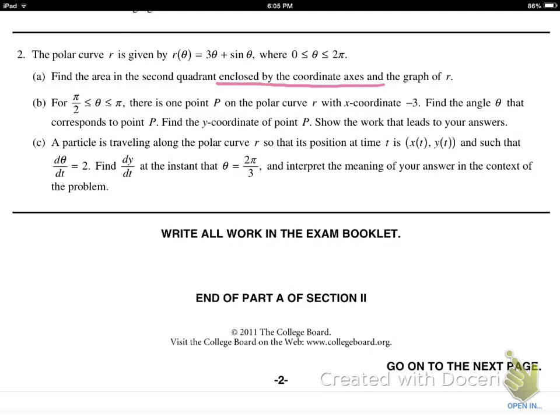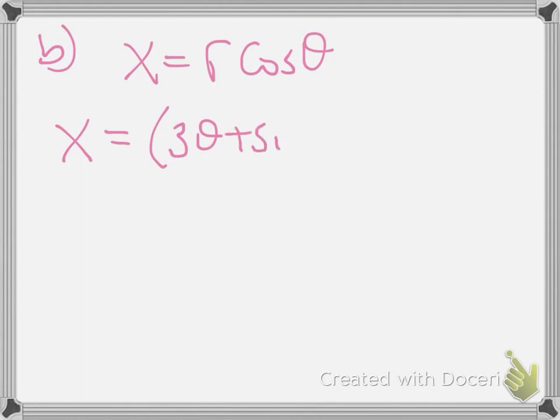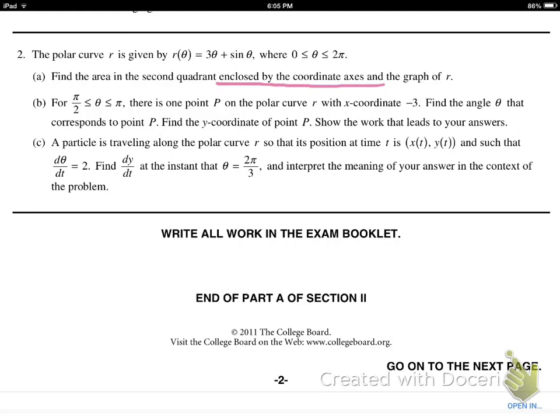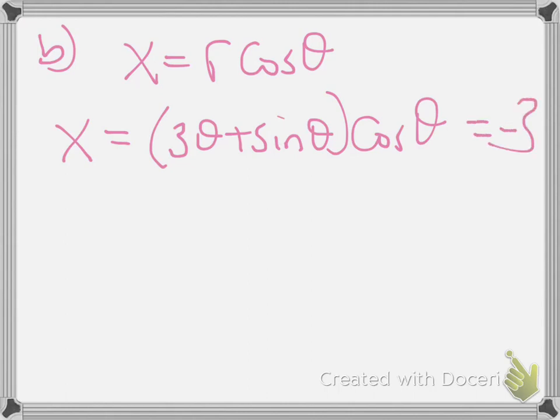The way we do that is through parametric equations. We know how to rewrite x and y from polar back to its parametric forms. We remember that x = r cos(θ). For this, x is going to be (3θ + sin(θ)) cos(θ). That's how we get the x-coordinate. The question said the x-coordinate is -3. So all I'm doing is solving when this is equal to -3. We do have to figure out the y-coordinate as well. But that's not that hard. We just need to use our calculator wisely.